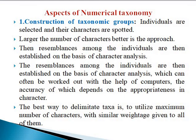There are mainly two aspects of numerical taxonomy. The first is the construction of taxonomic groups. Individuals are selected and their characters are noted. The larger the number of characters, the better the approach, because it is a mathematical taxonomy. The aim is to utilize the maximum number of characters with similar weight given to all of them.